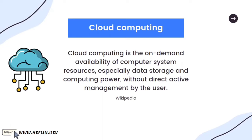Cloud computing is the on-demand availability of computer system resources, especially data storage and computing power, without direct active management by the user. The term generally describes data centers available to many users over the internet. That's what Wikipedia says — let me explain it with a real-life example.